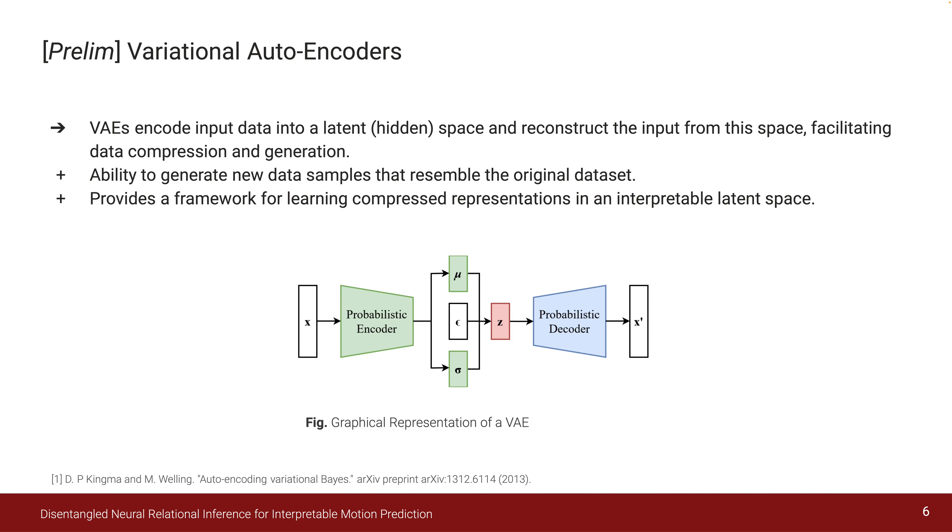Variational autoencoders, or VAEs for short, are generative models that excel in learning deep representations of data in an unsupervised way. They do so by encoding data into a latent space and then reconstructing the input from that space.